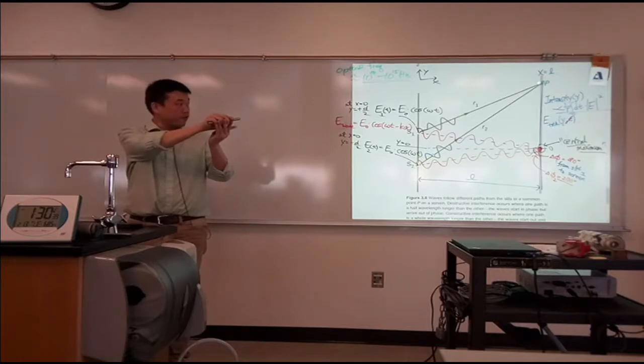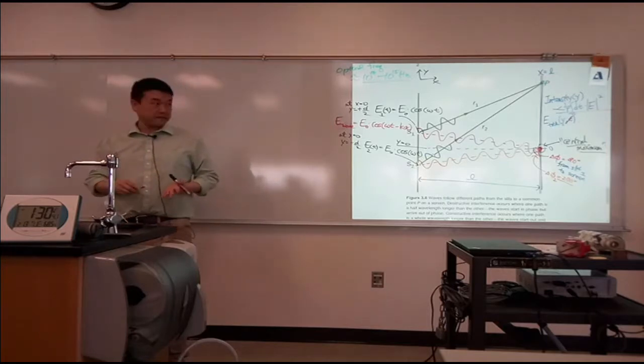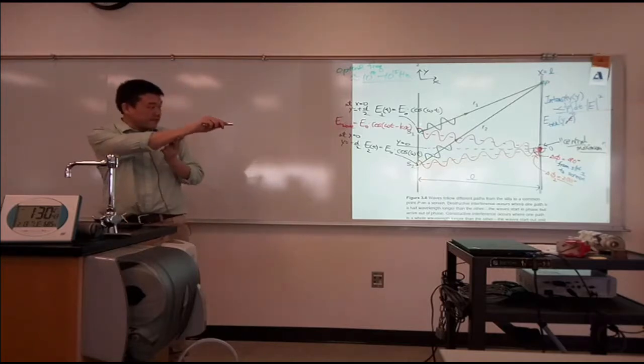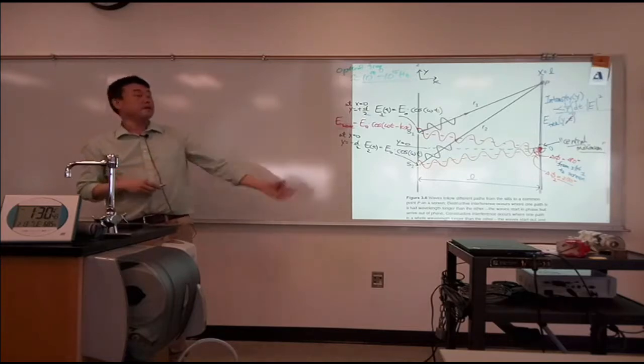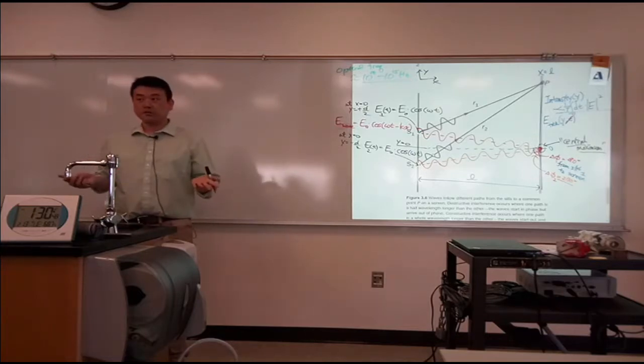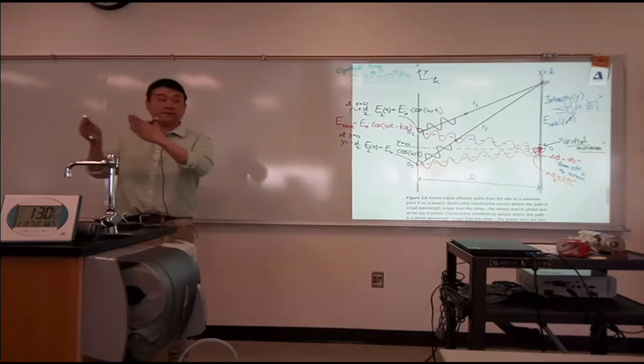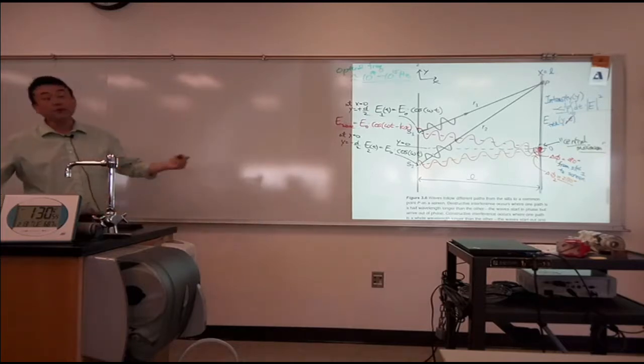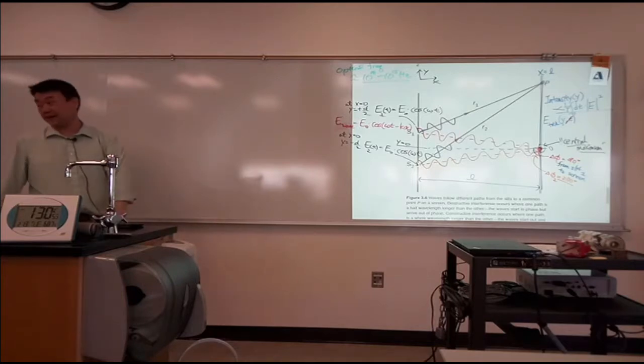That point on the screen is not at the same distance from the two slits. You can see that in the sketch itself, right? Then the question is, how much is the difference in that path length? And if you want to do the exact geometry, it'll get complicated.